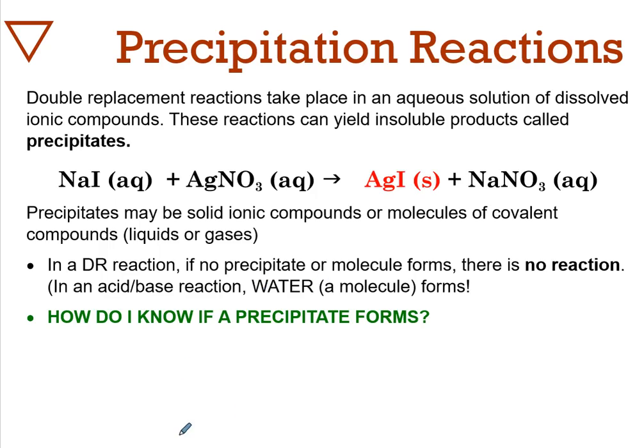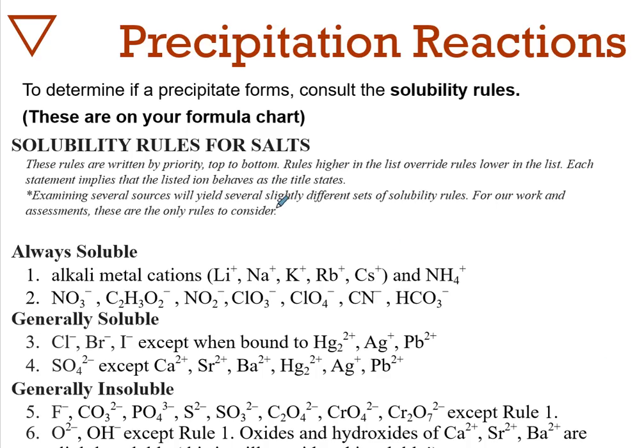How do we know when double replacement happens? We go back to our solubility rules. This is not complete and not designed to memorize - you have this resource on your card. The solubility rules work top to bottom, so the most important rule is rule one. A rule higher on the list trumps a rule lower. For example, carbonates are generally insoluble, but if bound to lithium they're soluble. Rule one trumps other rules.